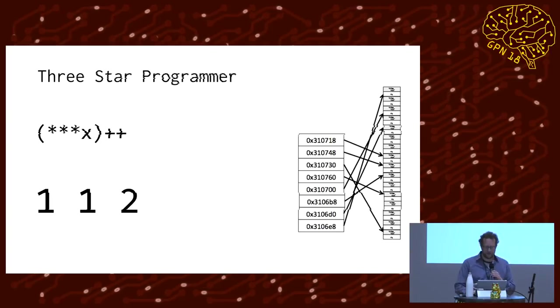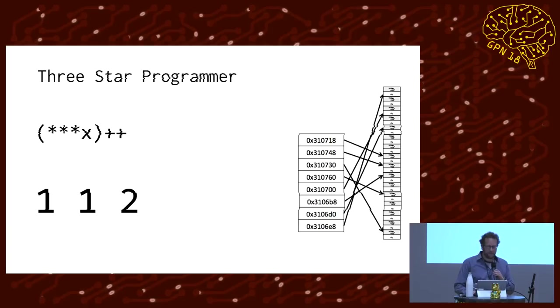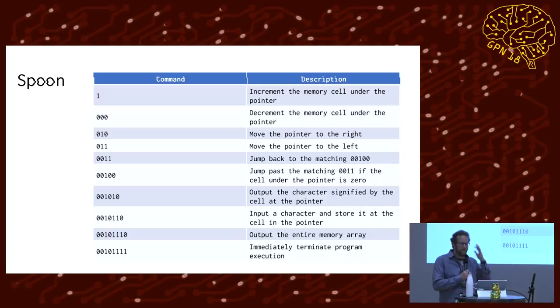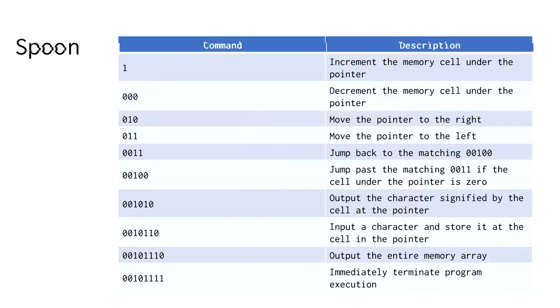To discuss the next couple languages, I have to go back to brainfuck for a minute and introduce spoon, which is basically a variation of brainfuck which is stored as binary digits, and it's Huffman encoded, which just means that the most commonly used brainfuck command, which is the increment, the plus, is stored as a one, so it can be repeated many times in a smaller space. This is just a simple variation of brainfuck that gets away from the punctuation and it's storing everything in binary.